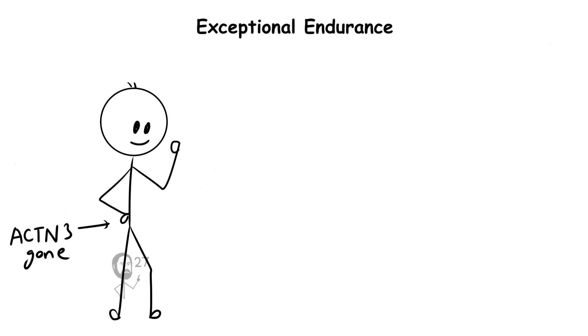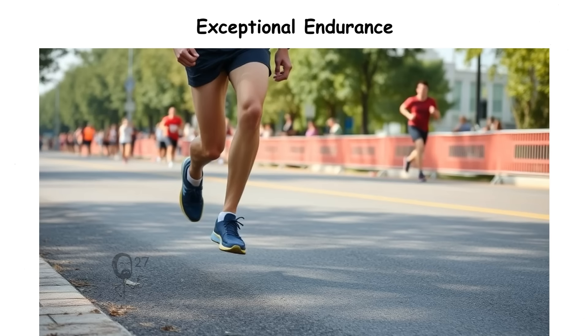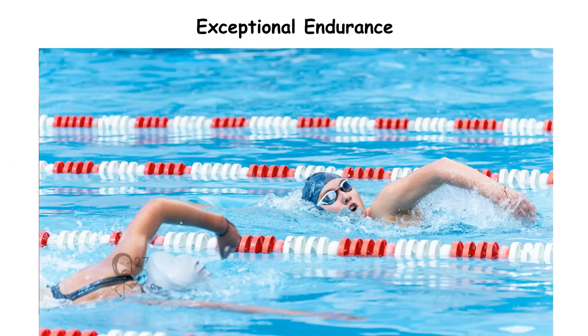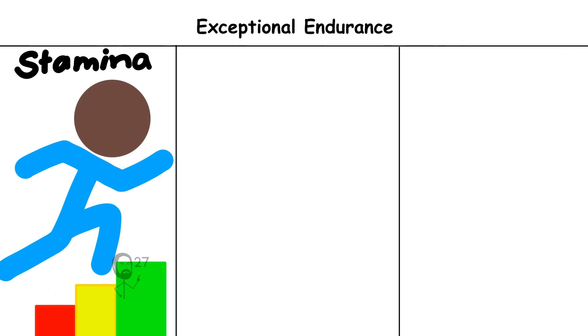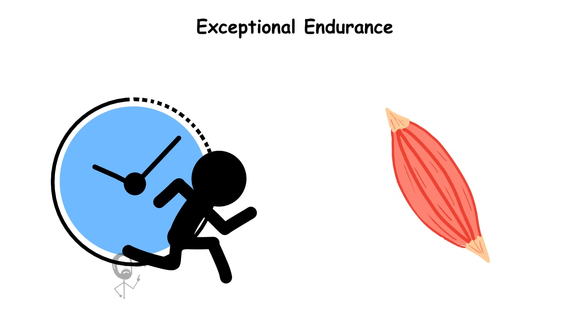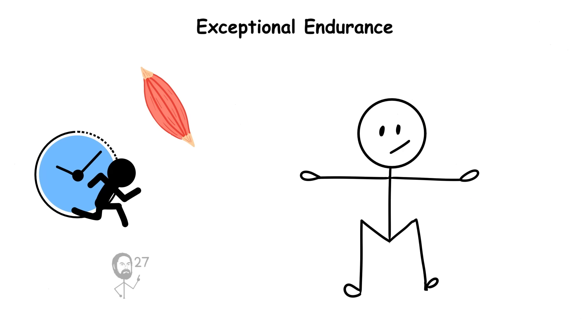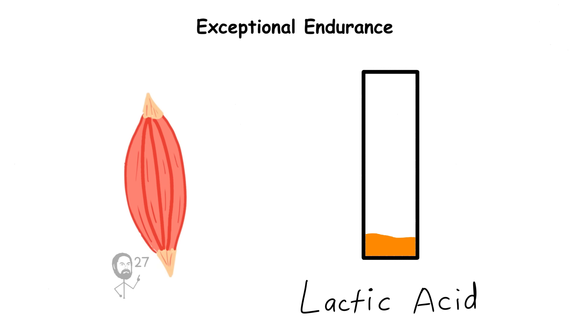People with this genetic setup excel in endurance activities such as long-distance running, cycling, or swimming, because their muscles resist fatigue and use oxygen more efficiently. This efficiency is not just about stamina. It extends to overall recovery and energy use.